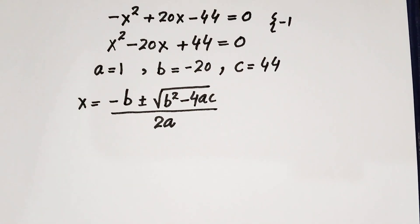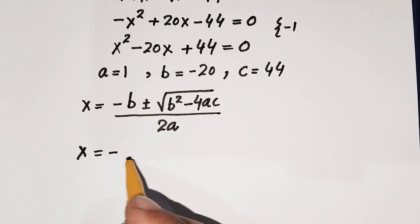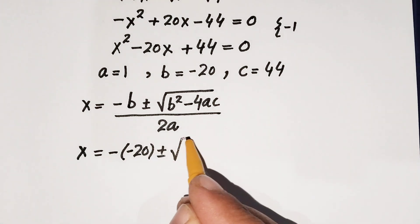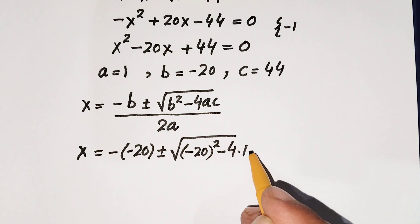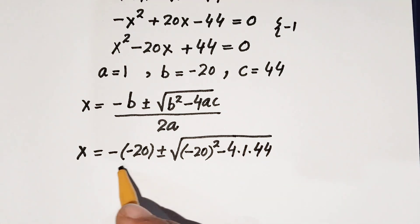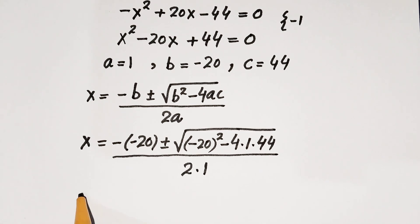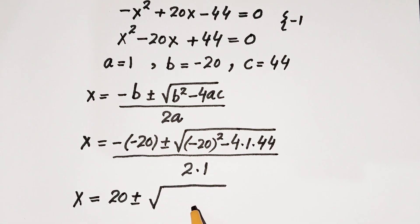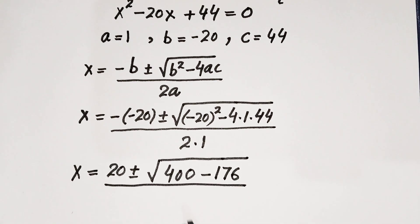Substituting the values of a, b, and c: x equals minus (minus 20) plus or minus the square root of (minus 20) squared minus 4 times 1 times 44, all over 2 times 1. This gives x equals 20 plus or minus the square root of 400 minus 176, all over 2.